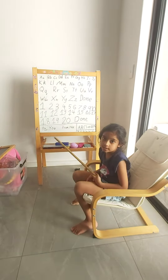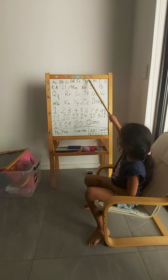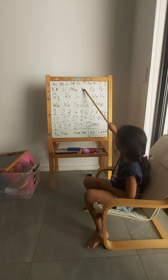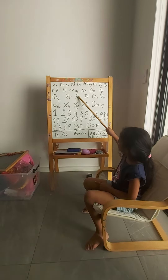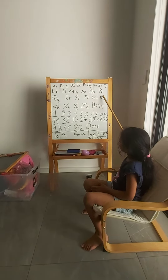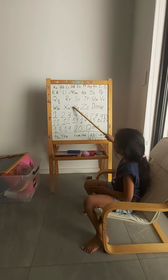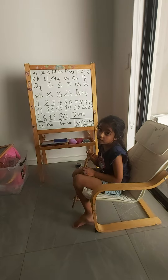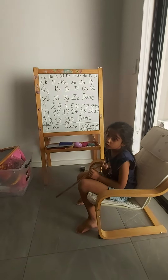First let's do the ABCs. A, B, C, D, E, F, G, H, I, J, K, L, M, N, O, P, Q, R, S, T, U, V, W, X, Y, Z. You sometimes say 'and' but sometimes you don't.